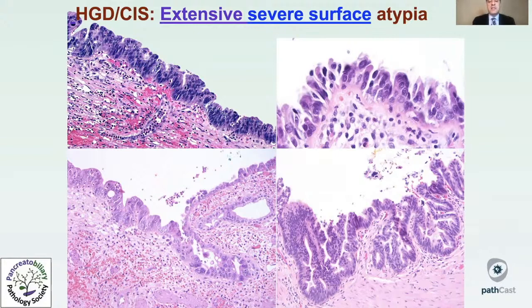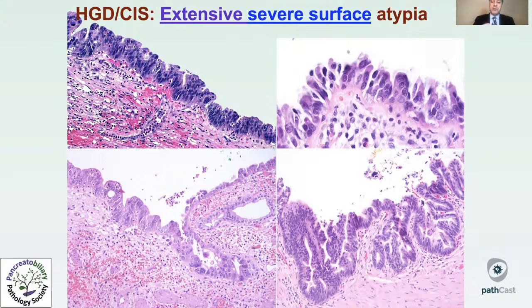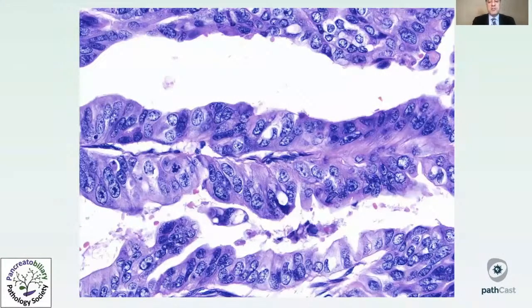Sharing some criteria we developed for distinguishing high-grade dysplasia from reactive atypia: true high-grade dysplasia/CIS typically shows extensive and severe surface atypia that does not miss the eye even on low-power examination. It really stands out — an area of complexity, blueness, and abnormality that persists. Many true high-grade dysplasia/CIS cases have substantial cytologic and architectural atypia: overlapping nuclei, nuclear abnormalities, pleomorphism, disorganization — all attributes of cancerous transformation are typically evident.